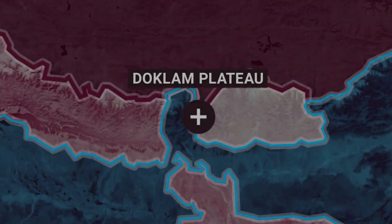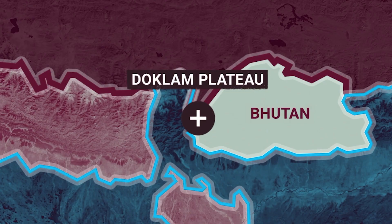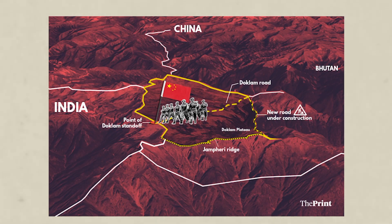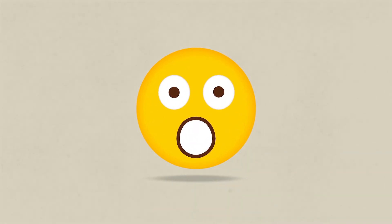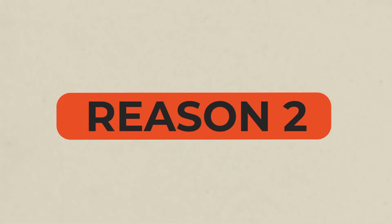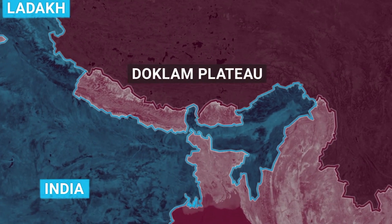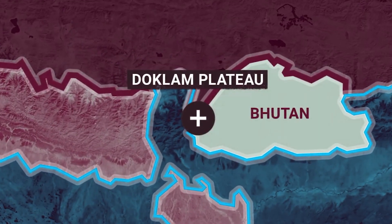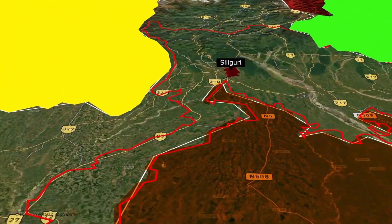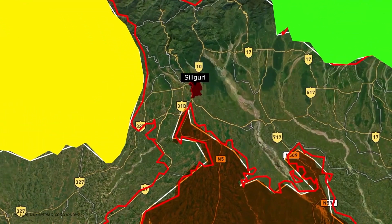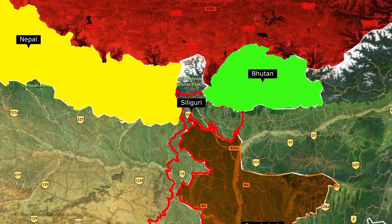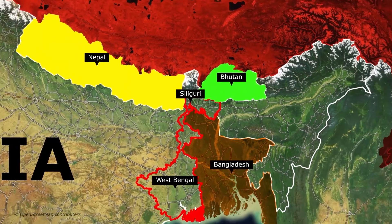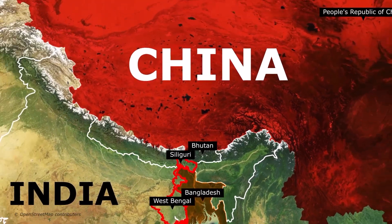India and China had a months-long standoff at Bhutan's Doklam region when the Indian army sent troops to stop China from constructing a road in that area. You may wonder why India bothered when China was building a road in Bhutan. First, Bhutan is an ally of India. The second reason is more strategic: the Doklam Plateau can give China access to the Siliguri Corridor, or the Chicken's Neck — a thin strip of land near the city of Siliguri in West Bengal connecting India's northeastern states with the rest of the country. If China occupies this strip, it could easily take over the entire northeastern states.